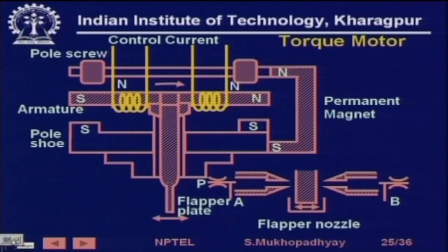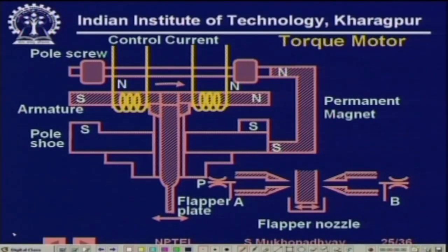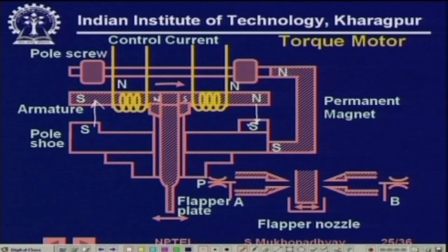Here you see the construction of the torquer. When you create an S pole here and an N pole here and N pole here, S pole — that is the way it is wound. You have this pole shoe. If you send currents like this, this is going to repel and this is going to attract. So this torquer will slightly tilt, and it is this tilt which is connected to the flapper plate. This is the way you control the flapper.